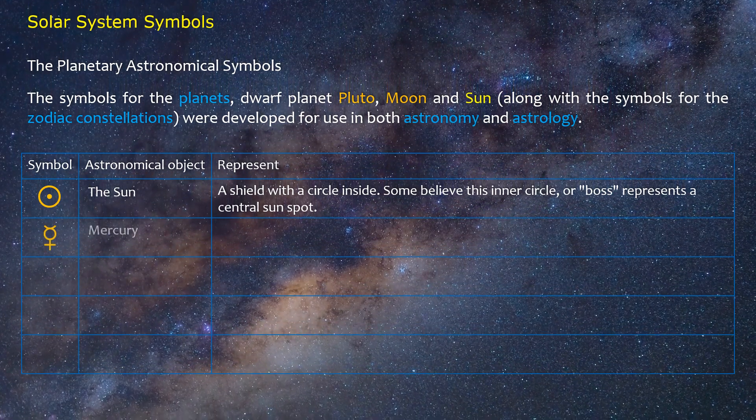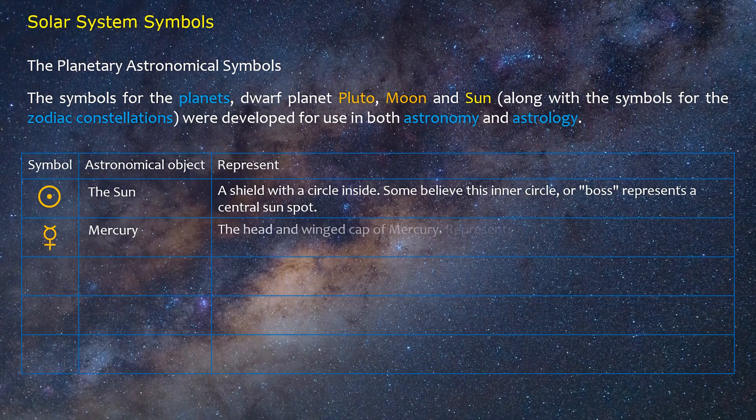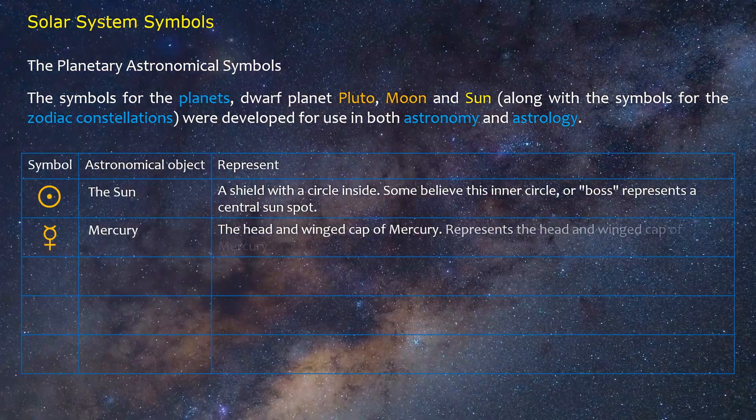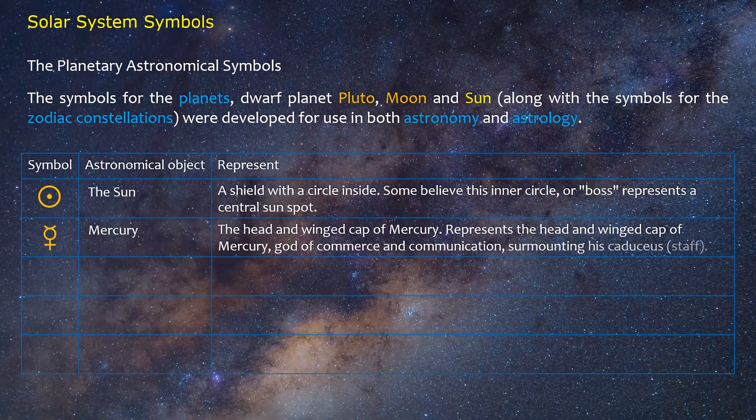Mercury: The head and winged cap of Mercury. Represents the head and winged cap of Mercury, god of commerce and communication, surmounting his caduceus staff.